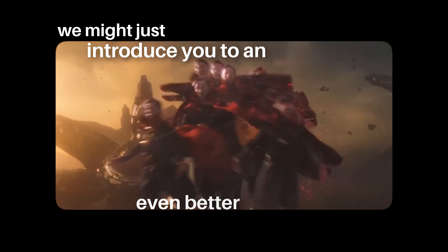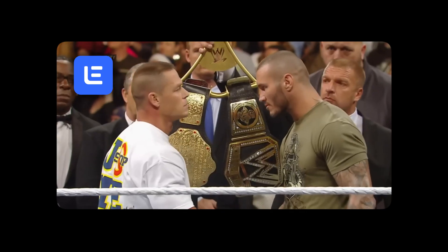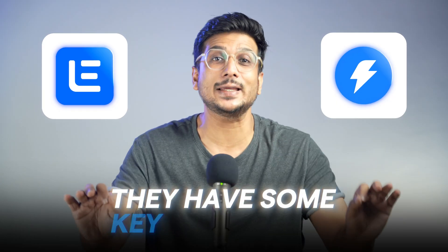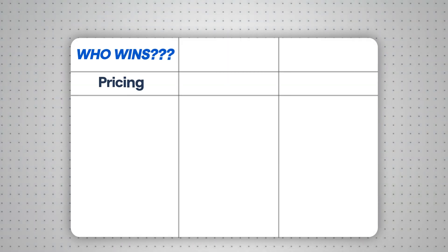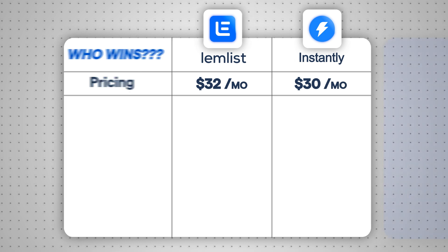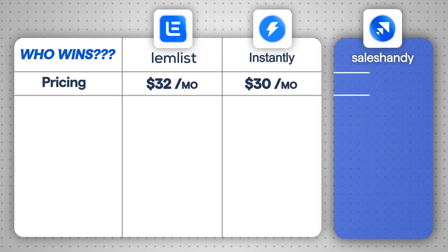You also need to stick around because we might just introduce you to an even better alternative by the end. So let's start with the basics. Lemlist and Instantly are both solid options for cold email outreach, but they have some key differences. First up, pricing. Lemlist starts at $32 per month while Instantly comes in at a slightly cheaper price of $30 per month. But there is another cold email tool called Sales Handy that offers similar features for just $25 per month.